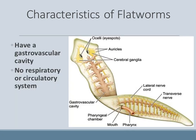Like cnidarians, they have a gastrovascular cavity for digestion, meaning the opening of their mouth is also their anus and is also utilized for reproduction. They do not have a respiratory or a circulatory system. Their bodies are so thin that they exchange gases directly with their environment through osmosis and diffusion.